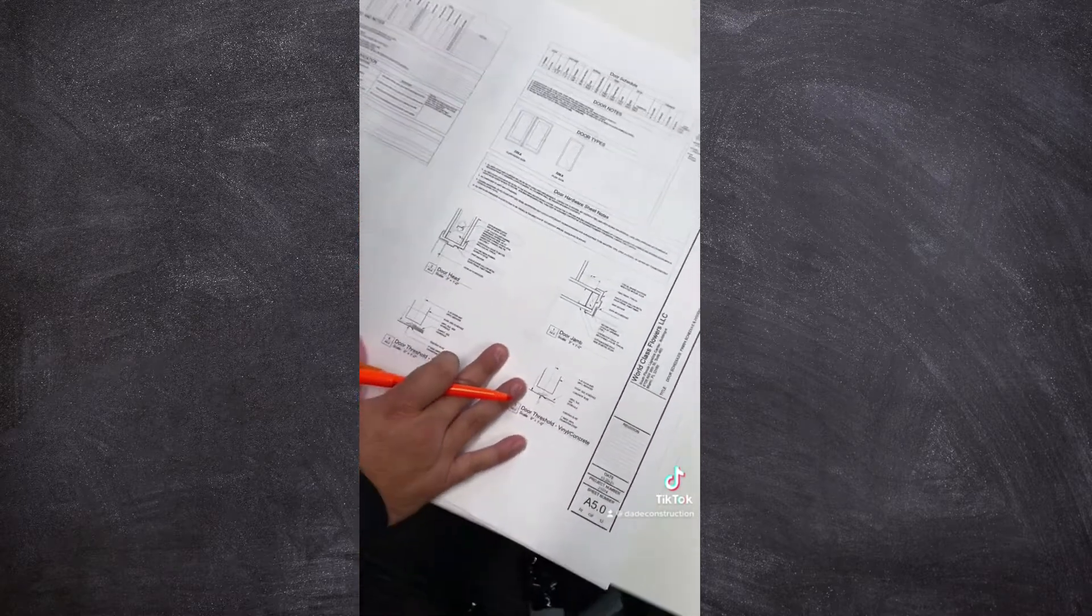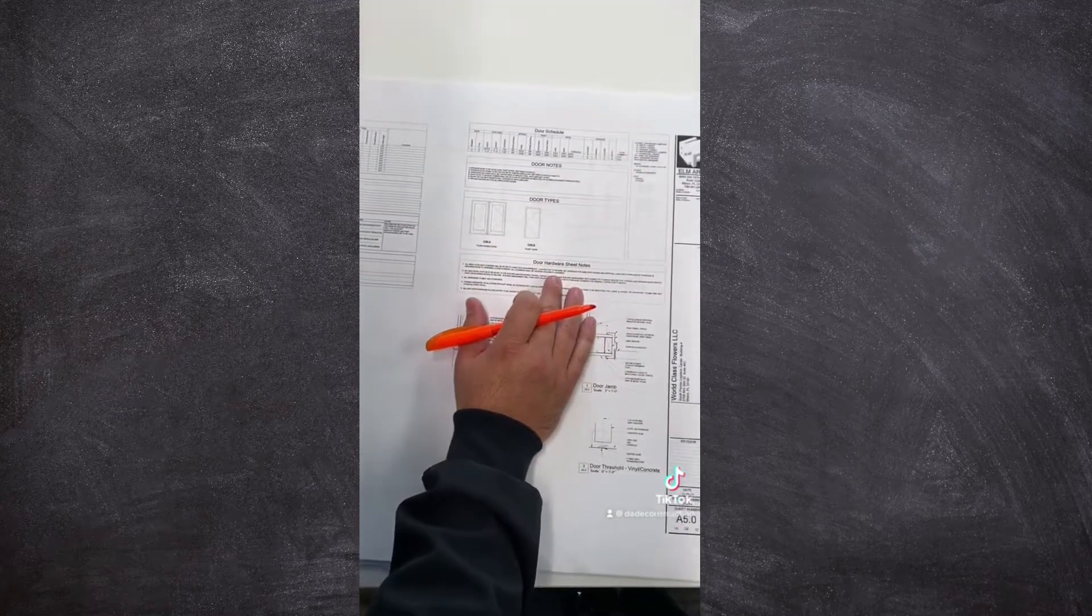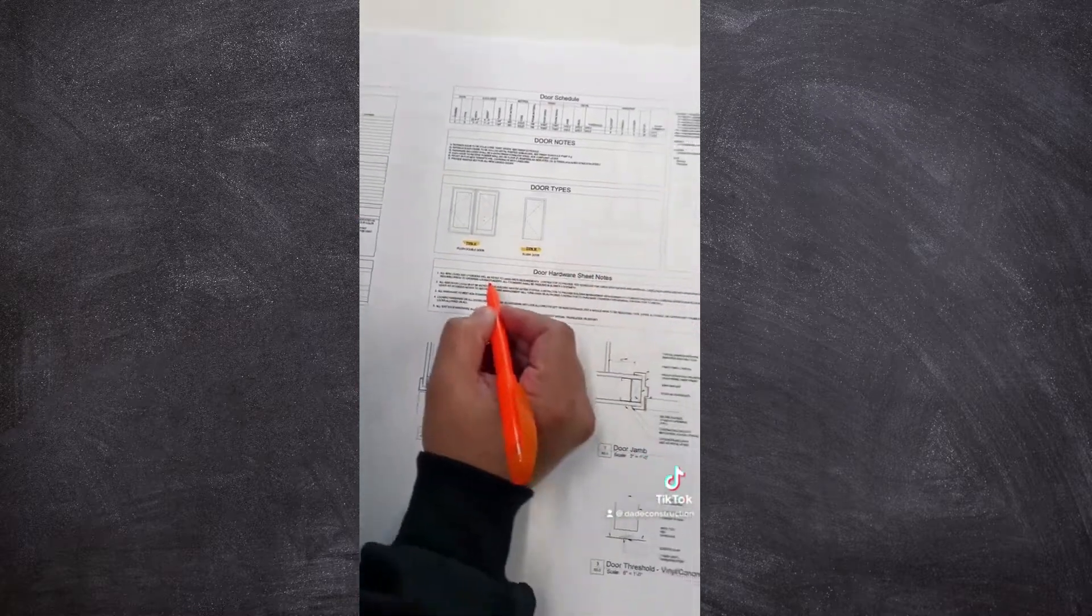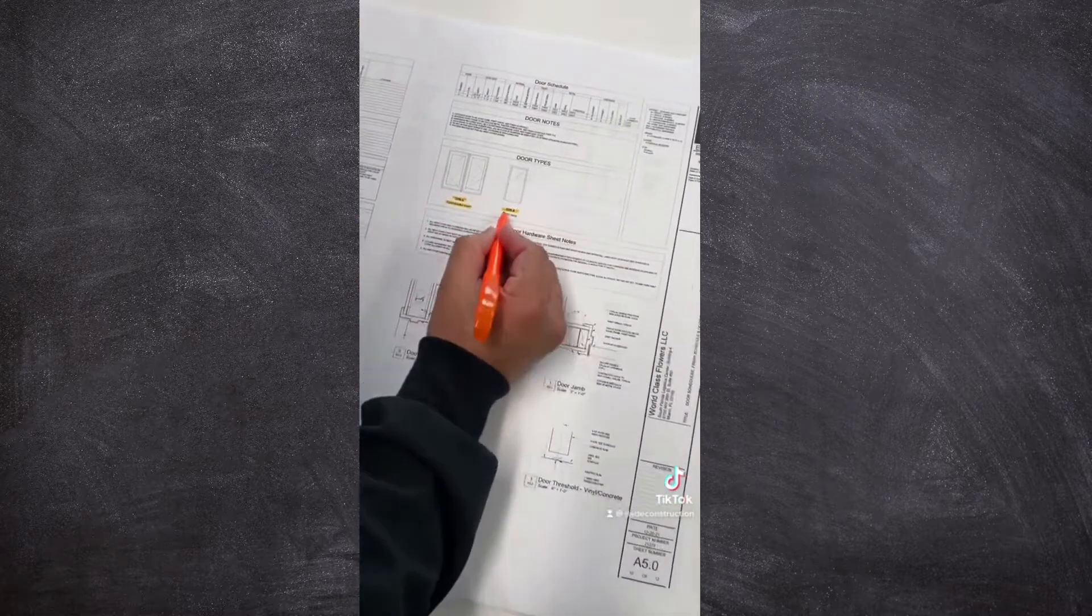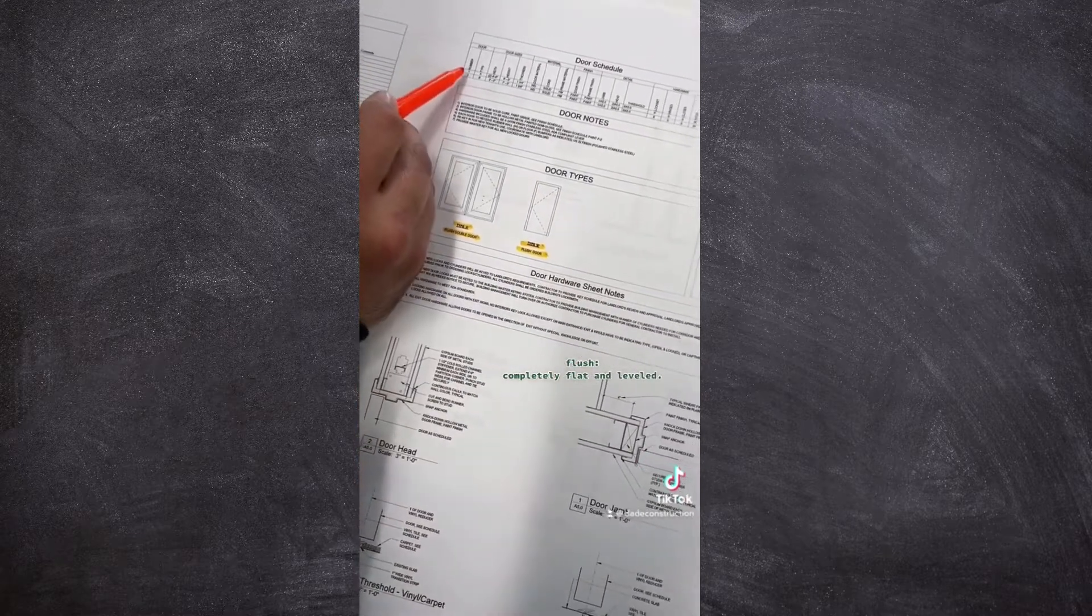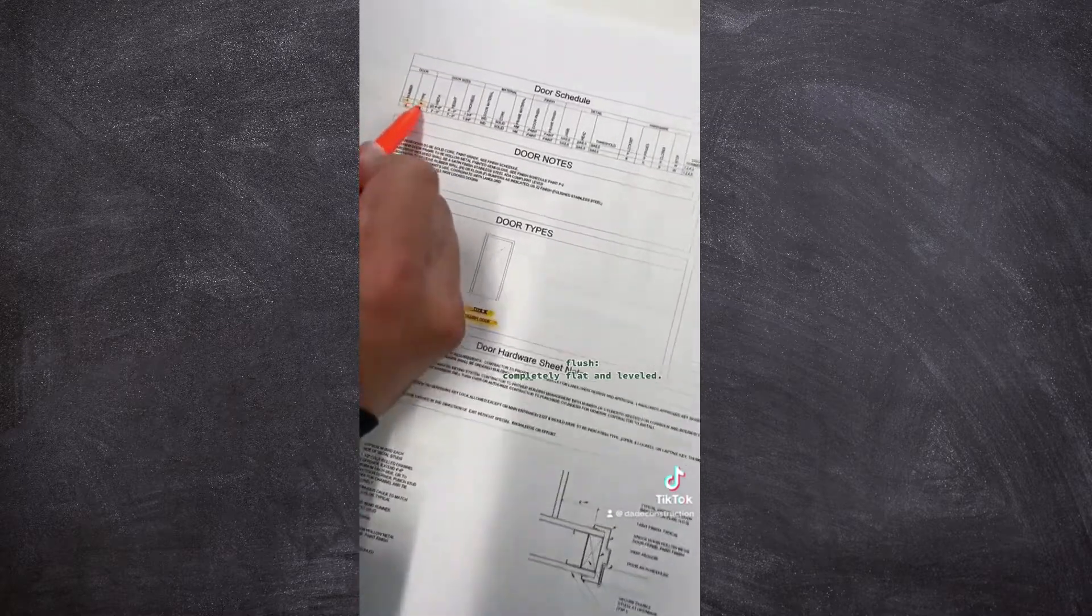And right here is your door schedule. So we have two types of doors. We have type A and type B. This is a flush double door and a flush single door. So number one is a type A and number two is a type B.